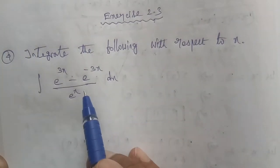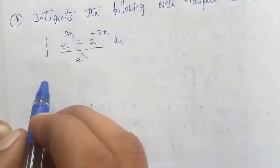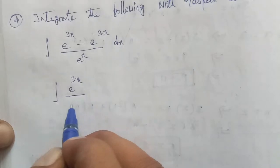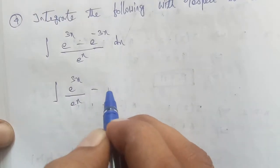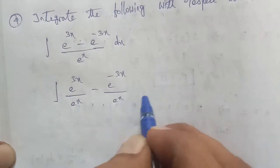So here in the question, they are in the denominator. Split the terms and we get integral of (e^(3x) / e^x) - (e^(-3x) / e^x) dx.